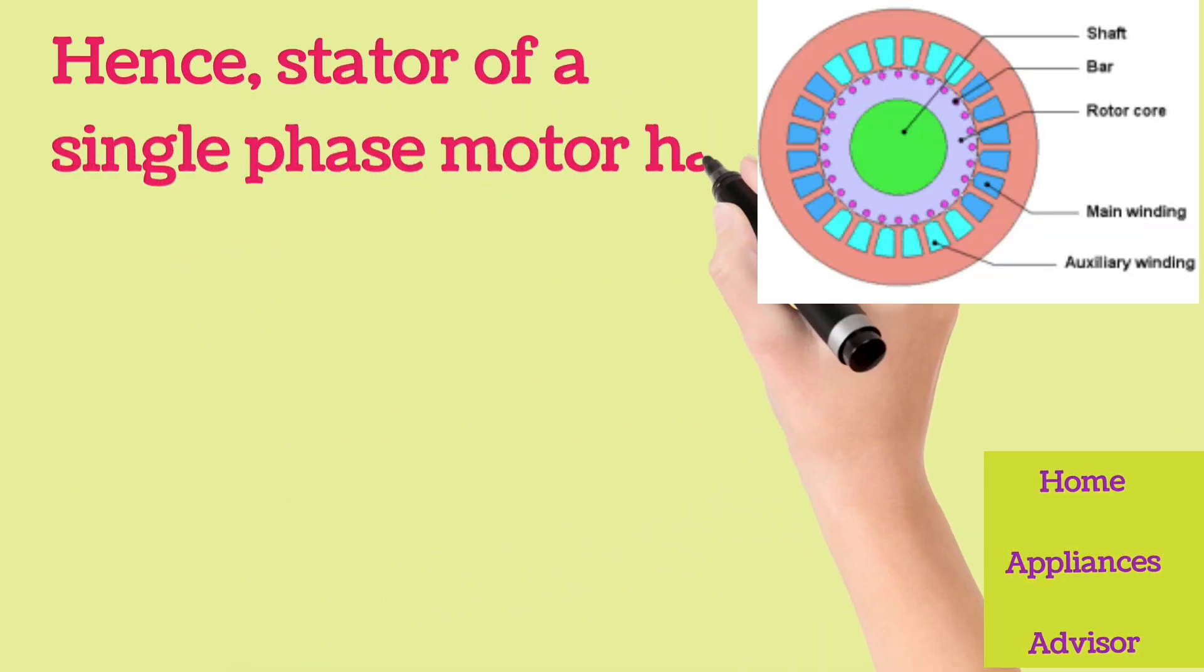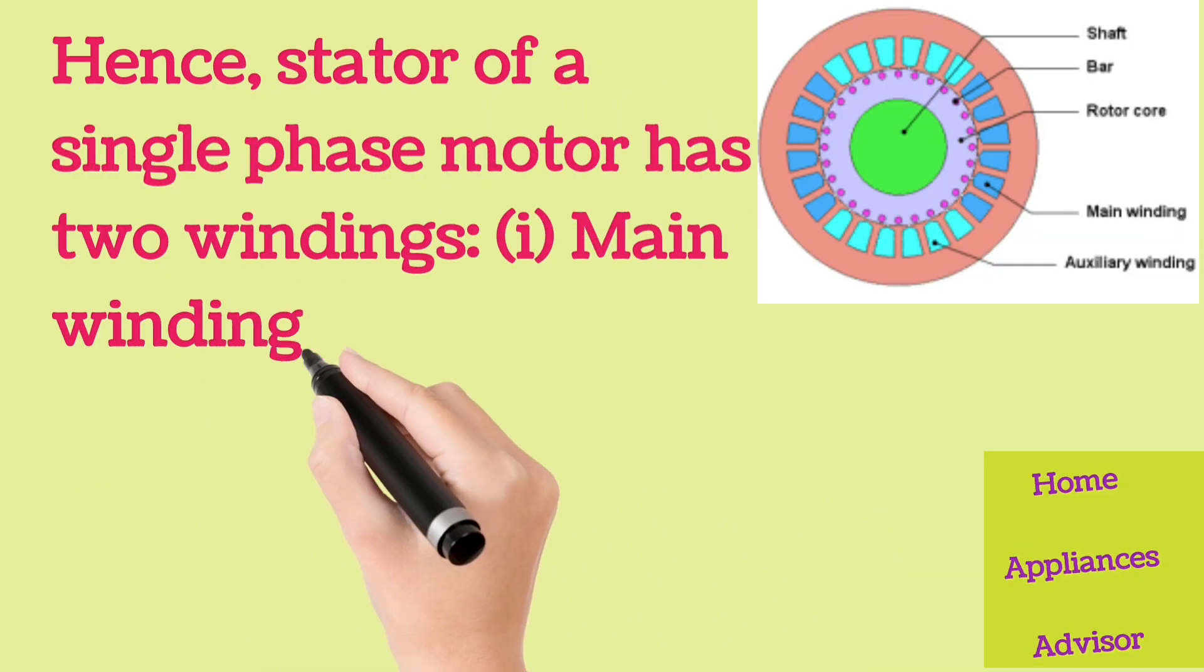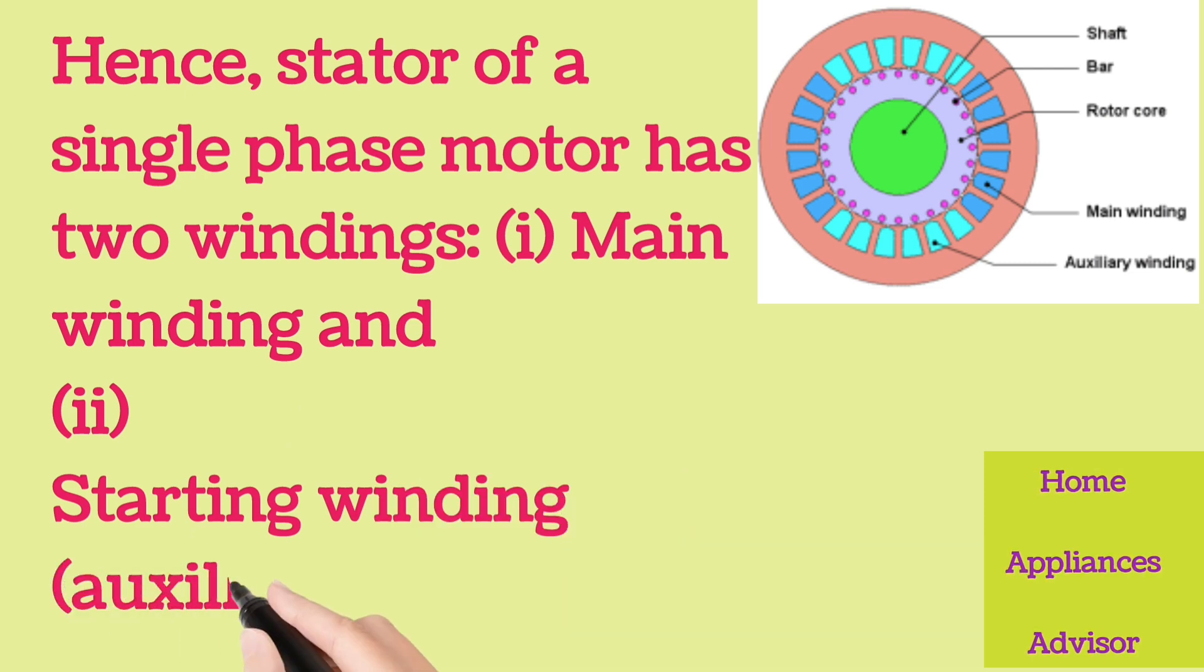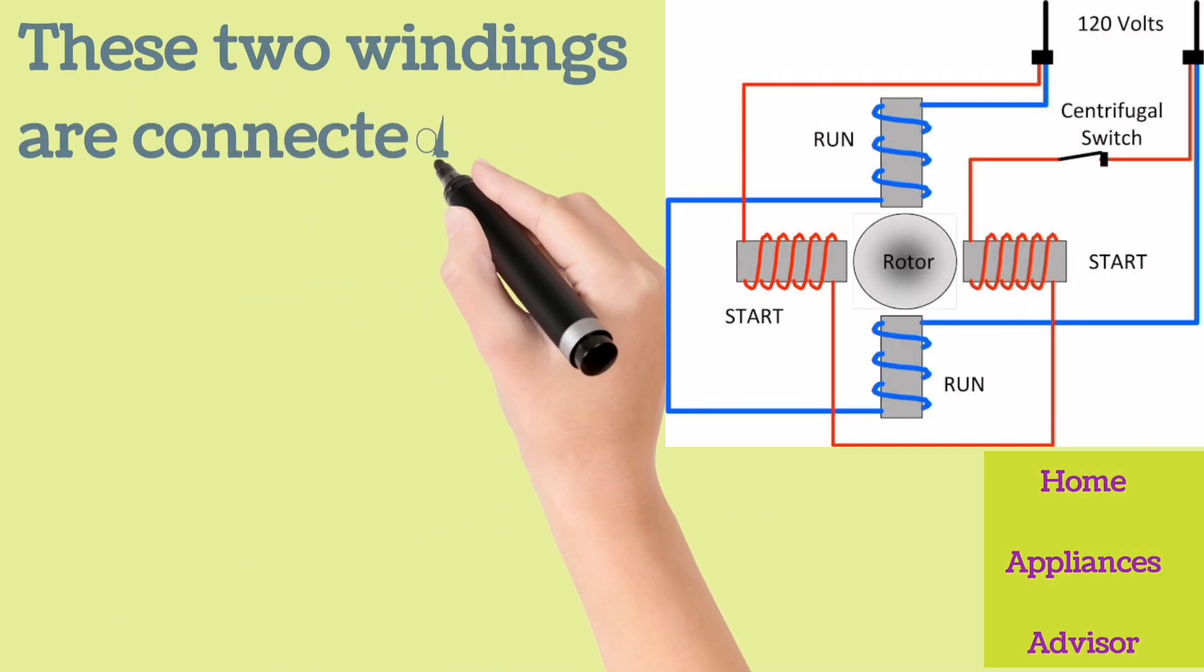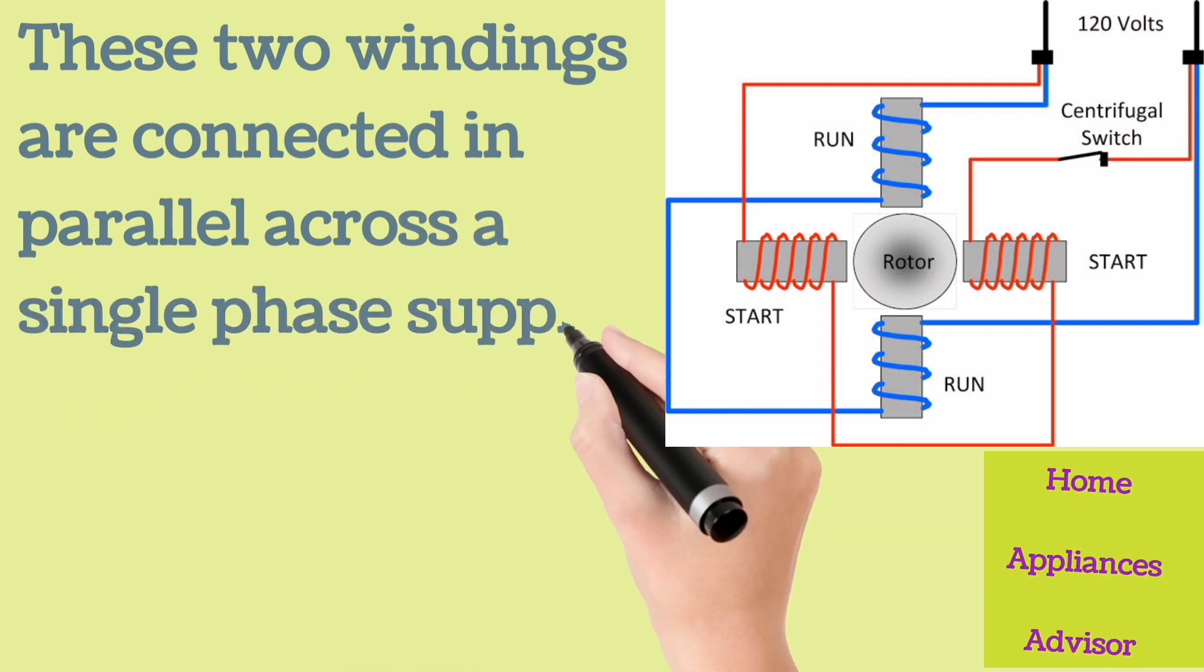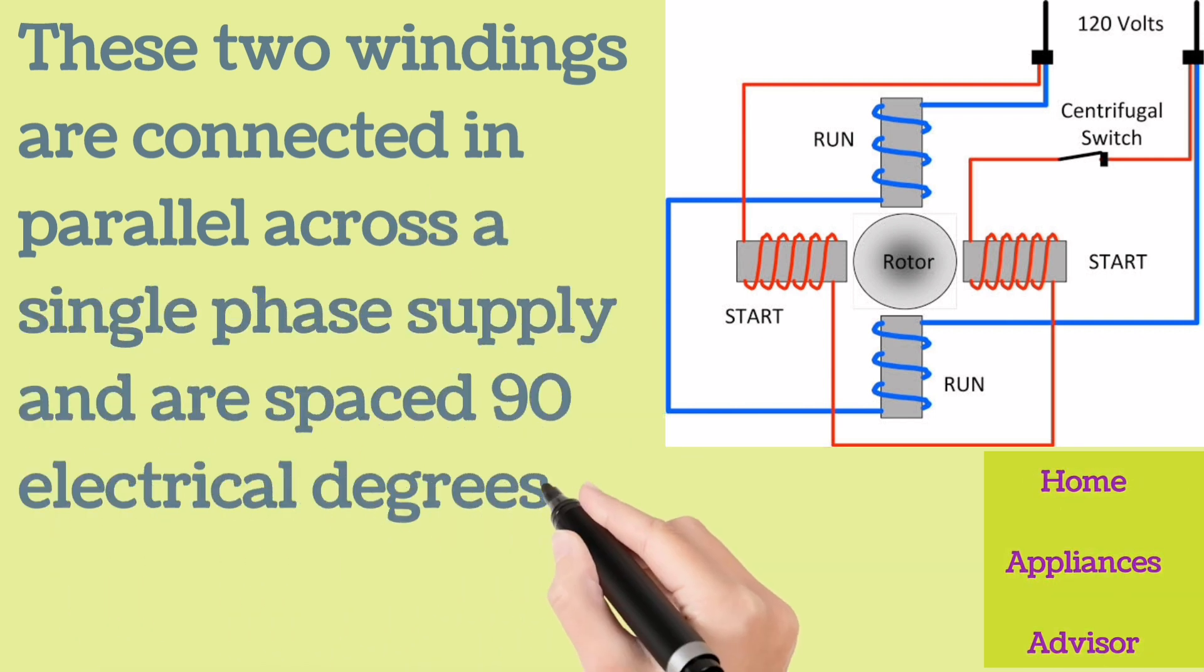Hence, the stator of a single phase motor has two windings: main winding and starting winding (auxiliary winding). These two windings are connected in parallel across a single phase supply and are spaced 90 electrical degrees apart.